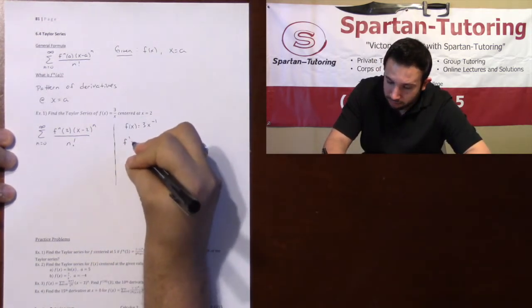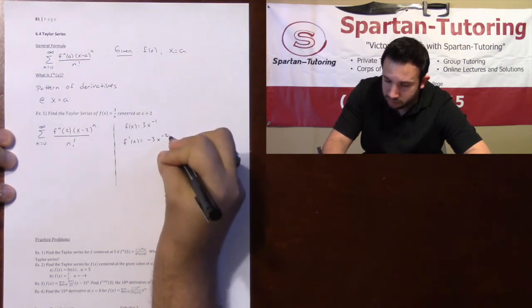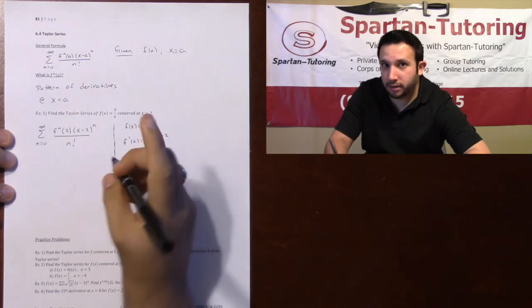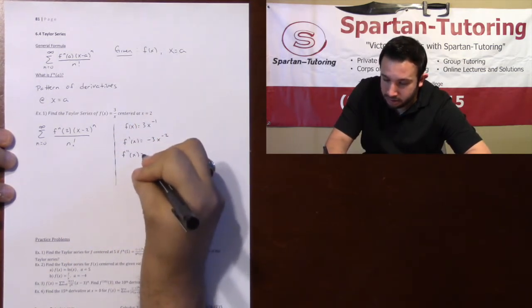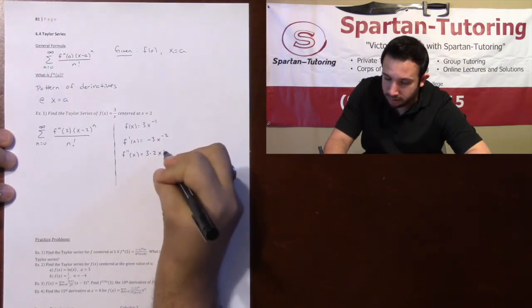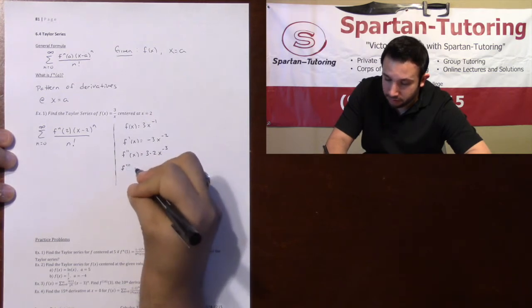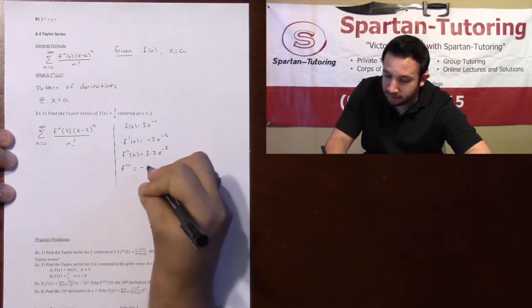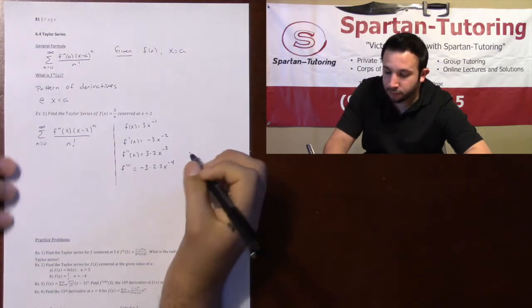So let's take the derivative several times until we start to see a pattern. And so f prime is going to be negative 3x to the negative 2. Now don't simplify. And what I mean by that is f double prime, this will be a positive 3 times 2x to the negative 3. My third derivative is going to be a negative 3 times 2 times 3, x to the negative 4.